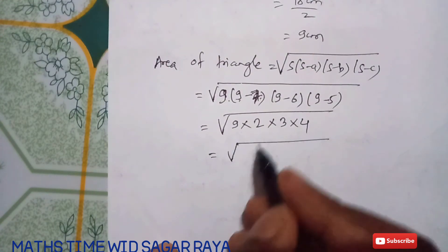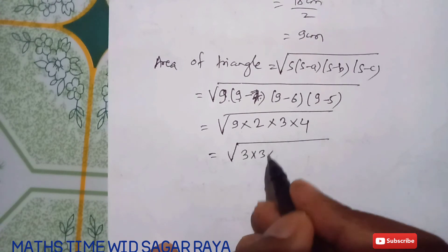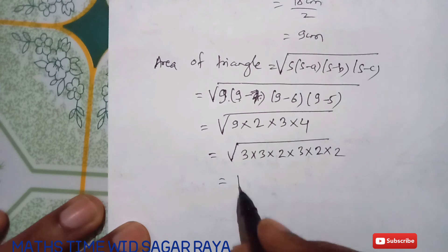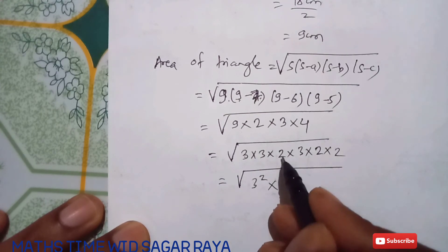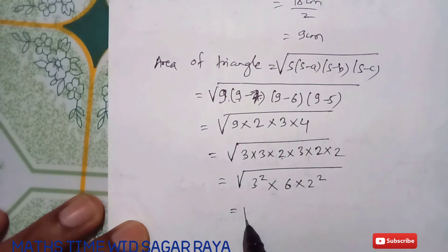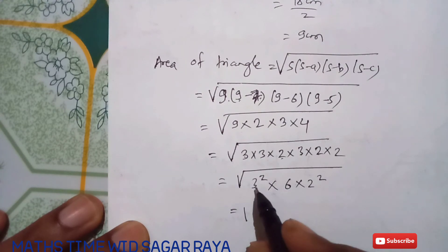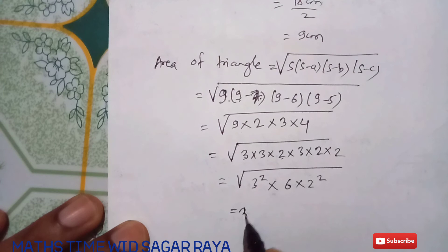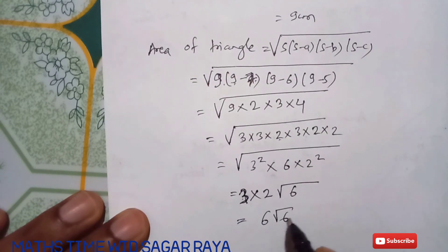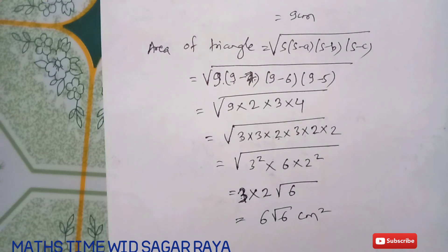Breaking down the factors: 9 = 3×3, 4 = 2×2. So we have 3² × 2 × 3 × 2² under the root. The 3² and 2² come out of the square root as 3 and 2 respectively, giving 3 × 2 × √6 = 6√6 cm square. So 6√6 cm square is the required answer.